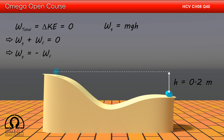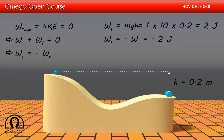Work done by gravity is equal to gravitational force into net displacement in the vertical direction, that is mg × 0.2 meters, or 1 × 10 × 0.2 = 2 joules. This work is cancelled by the work done by friction, hence work done by friction is −2 joules. This is our answer.